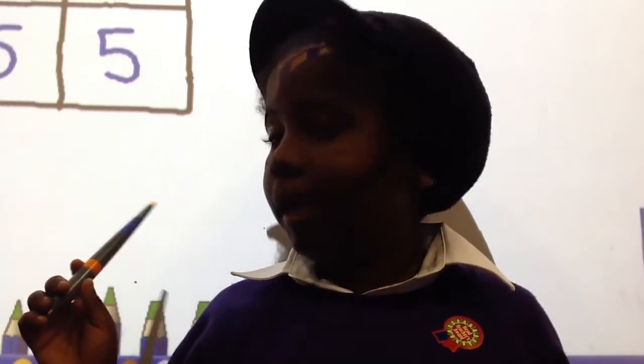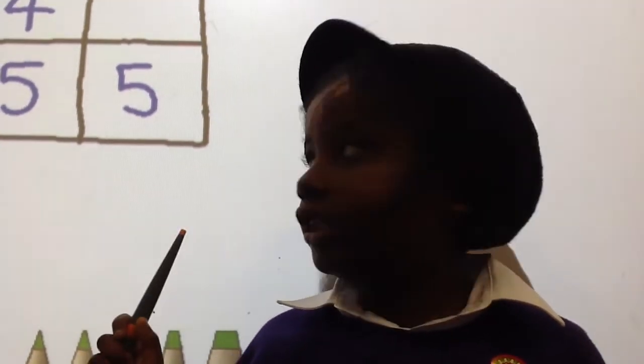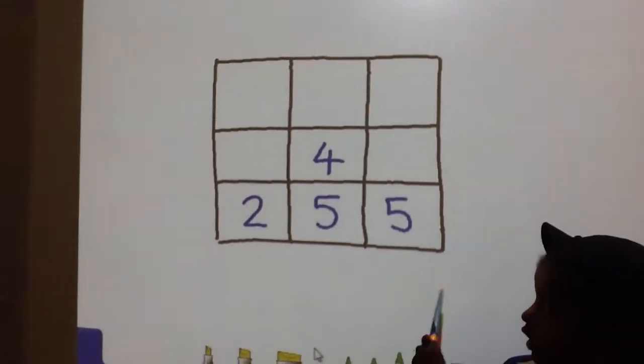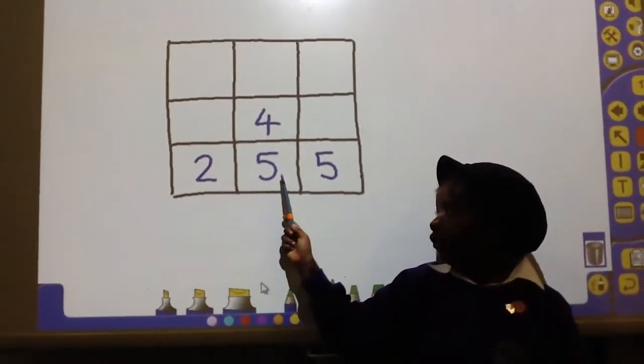And then next you can go diagonal this way, diagonal this way, or opposite. The easiest way is opposite.